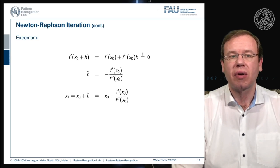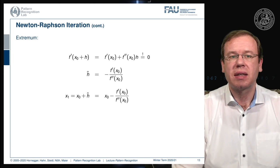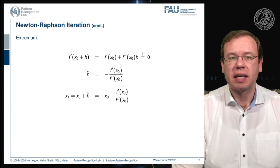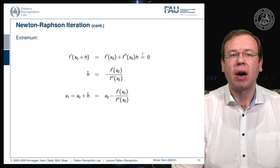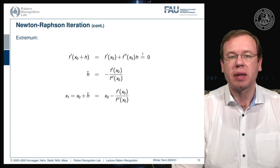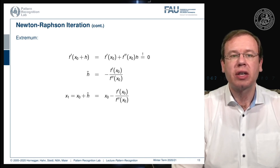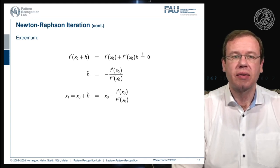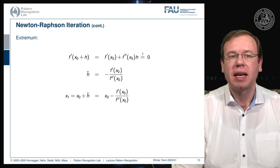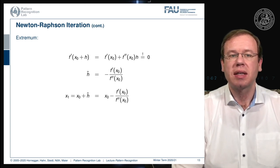The derivative of f can be expressed as the derivative of f at position x0 plus the second order derivative of the function at x0 times h. Now we want to find the minimum of this, so we have to set this to 0. If we want to set this to 0, we rearrange by subtracting f prime on the left hand side, bringing us to the right hand side with a negative sign, and divide by the second order derivative. This gives us an estimation of our h-hat.